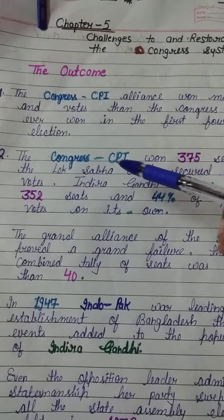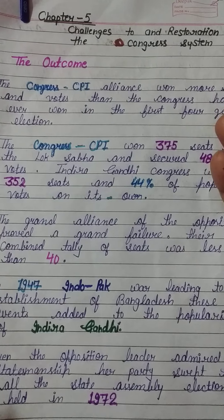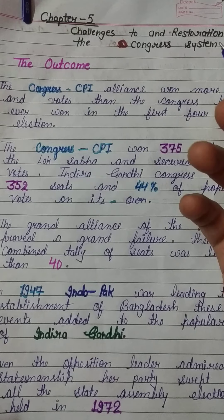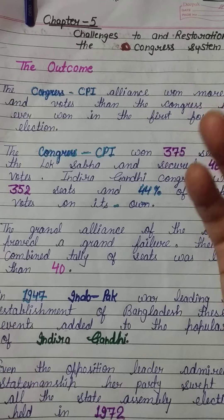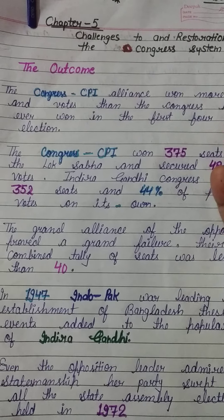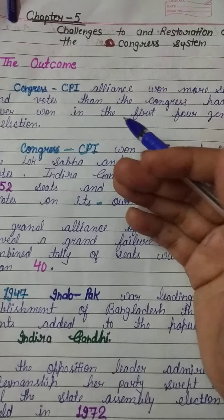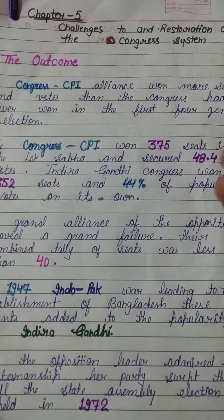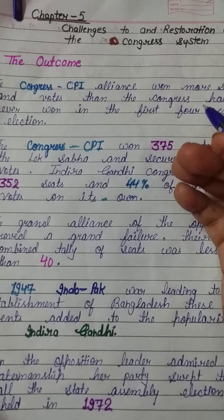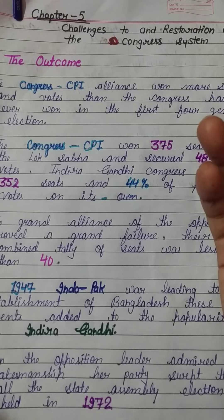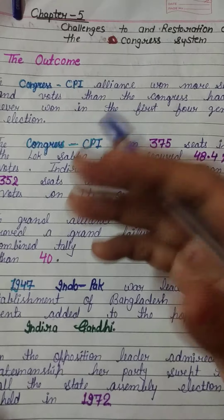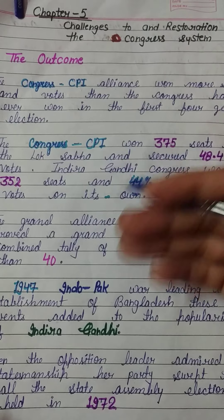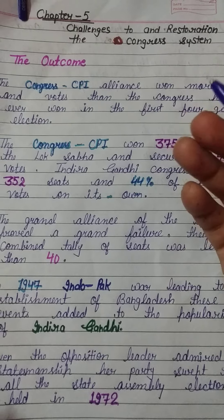As discussed in the last video, before the 1971 election, a few months earlier, Indira Gandhi's government had dissolved itself. In 1971, the election was won.